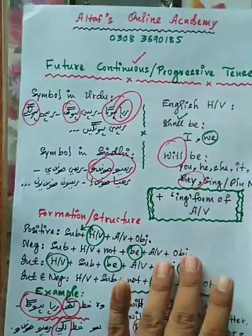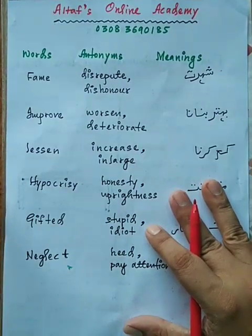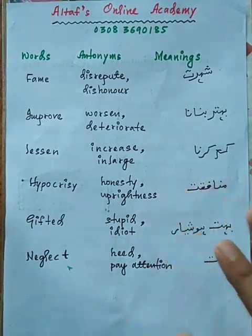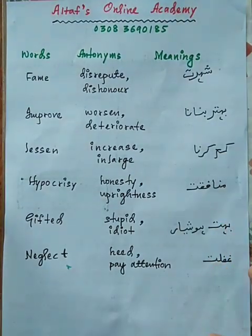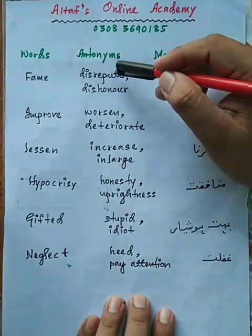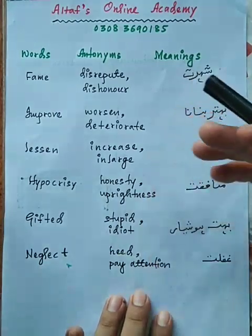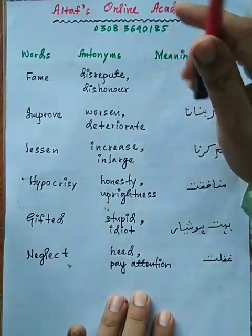Hopefully aapko yeh lesson samajh mein aa gaya hoga. Ab aage badhte hain five to fifteen scale ke liye. Aaj jo mein aapke liye laaya hun woh hai 'Words and their Antonyms', ya opposite meaning words. Antonyms ko opposite meaning word bhi kaha jaata hai, jisko hum Urdu mein 'azdaad' ya 'zidd' kehte hain.